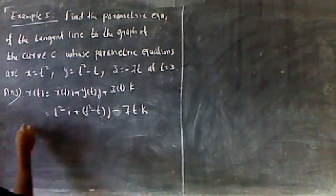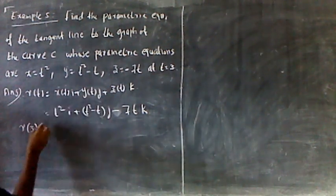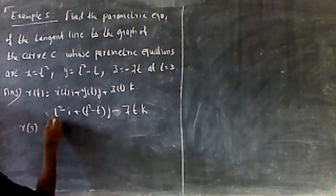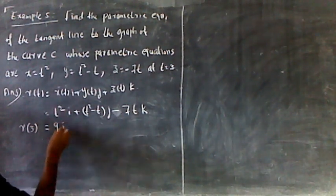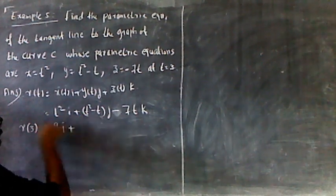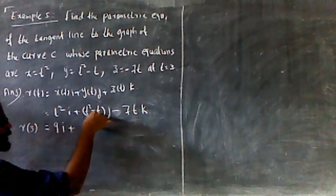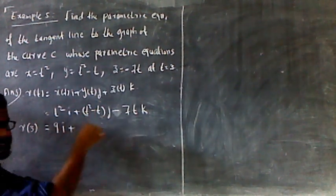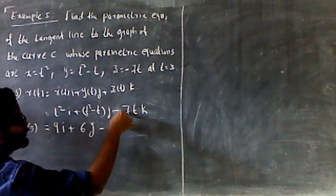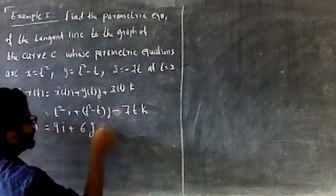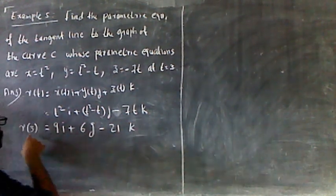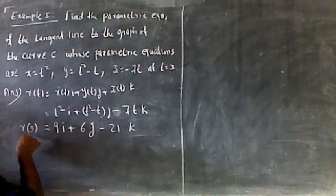x is equal to 3. R of 3 is equal to 6.99 plus 6.99 minus 3. And then you'll have to find r of 3.